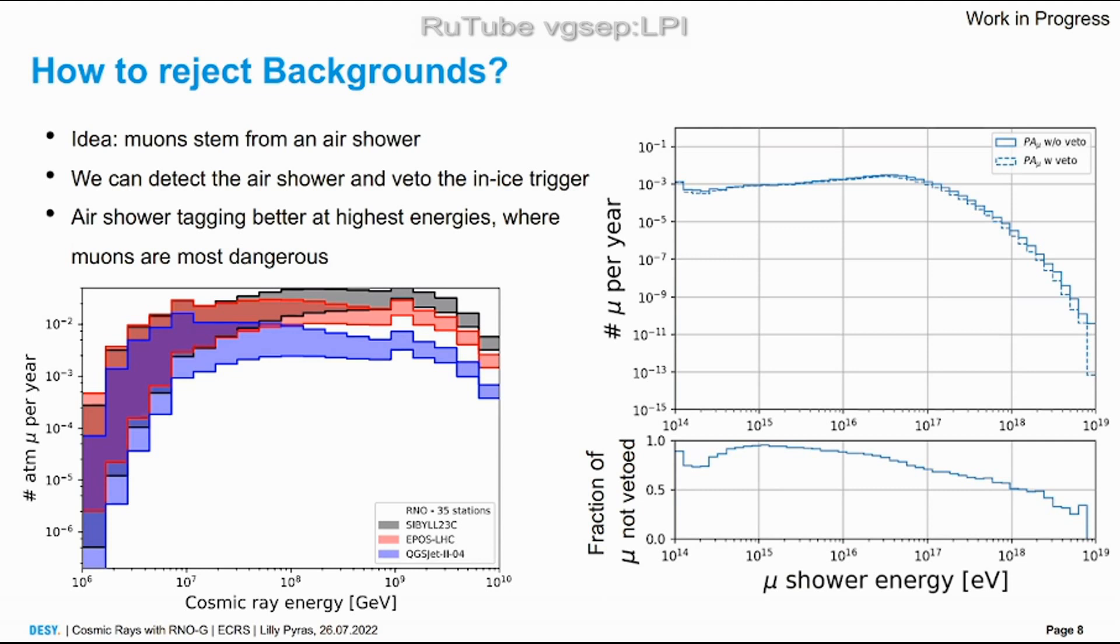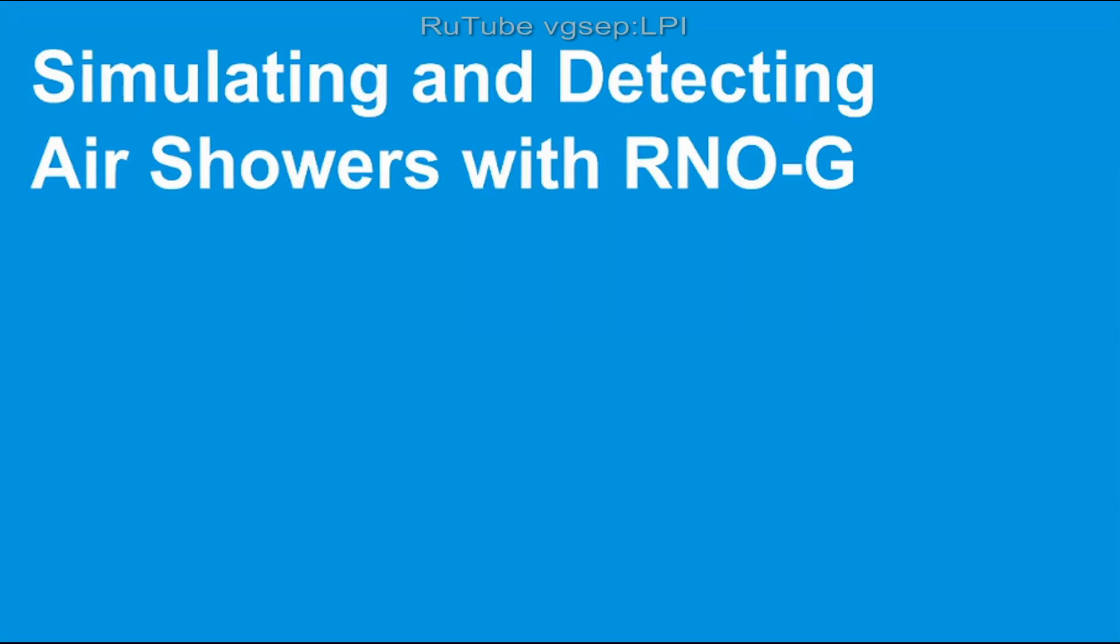Of course this veto efficiency strongly depends on our ability to detect cosmic rays. So I will talk more about the trigger mechanism and the simulations for air showers.